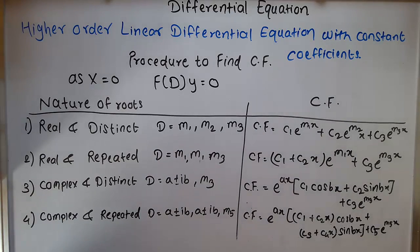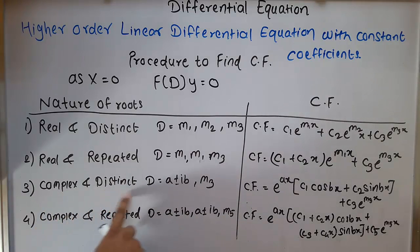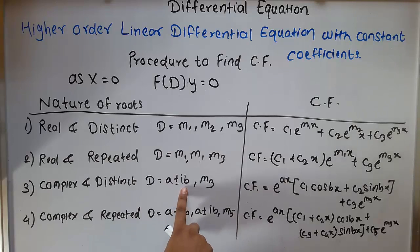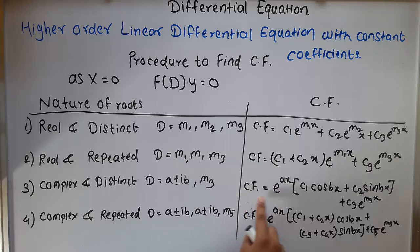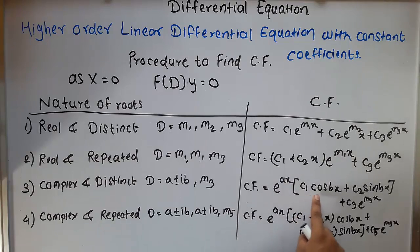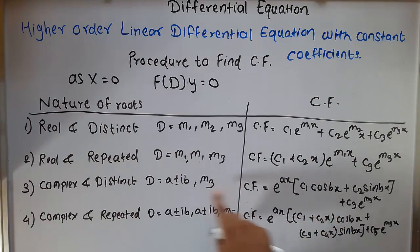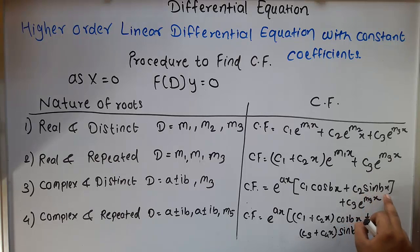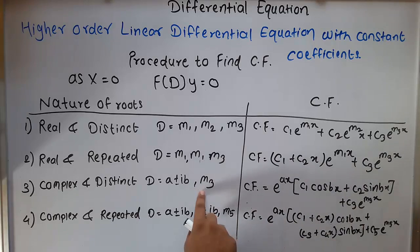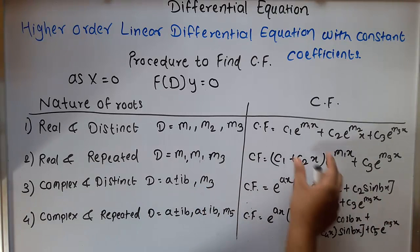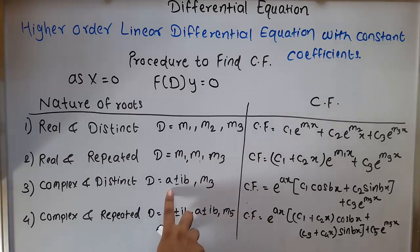Rule 3 — complex and distinct roots: if we have complex roots containing i, with D = a ± ib and m3, then CF = e^(ax)·[c1·cos(bx) + c2·sin(bx)] + c3·e^(m3·x). The only difference from the real distinct case is the complex number.